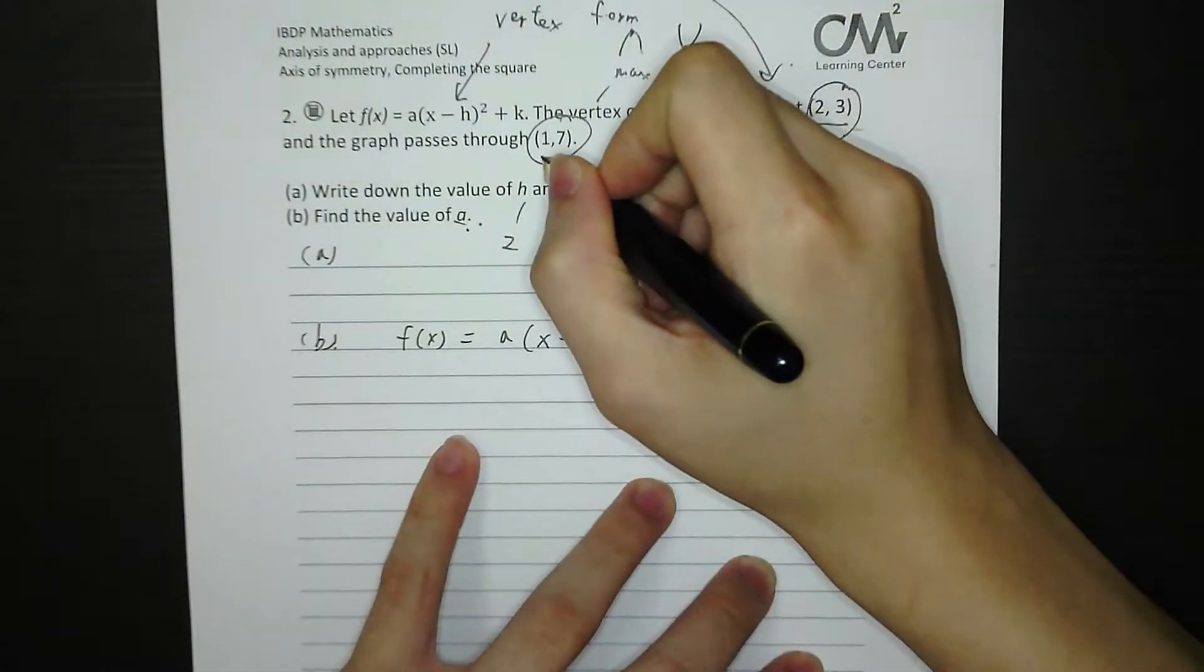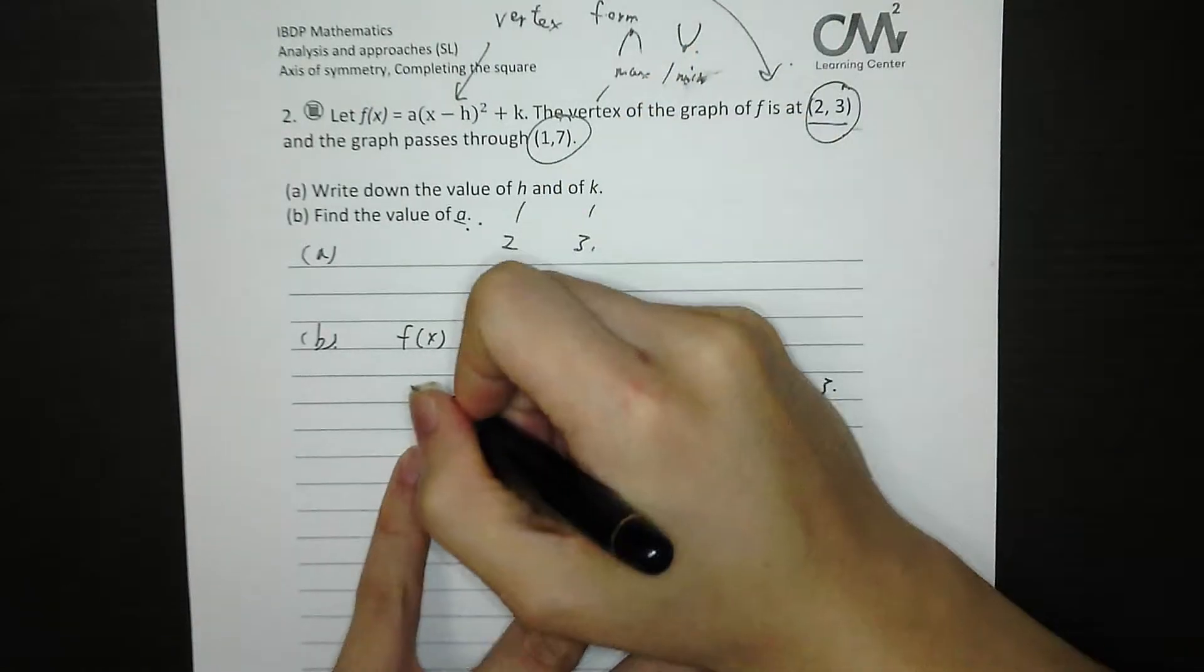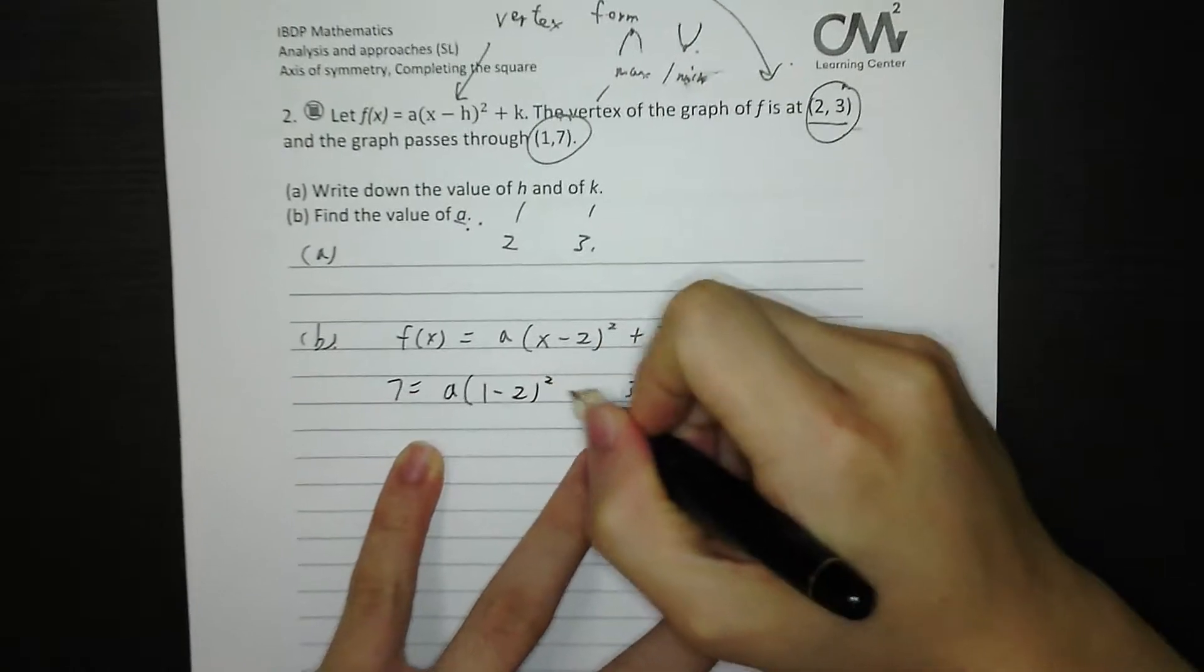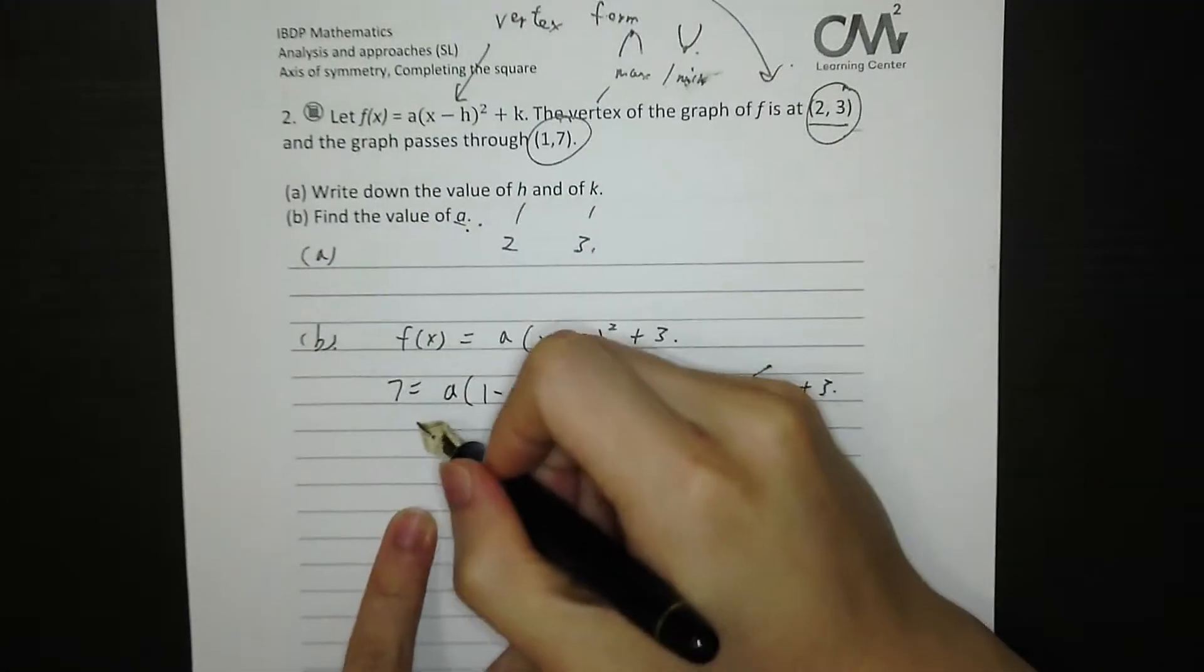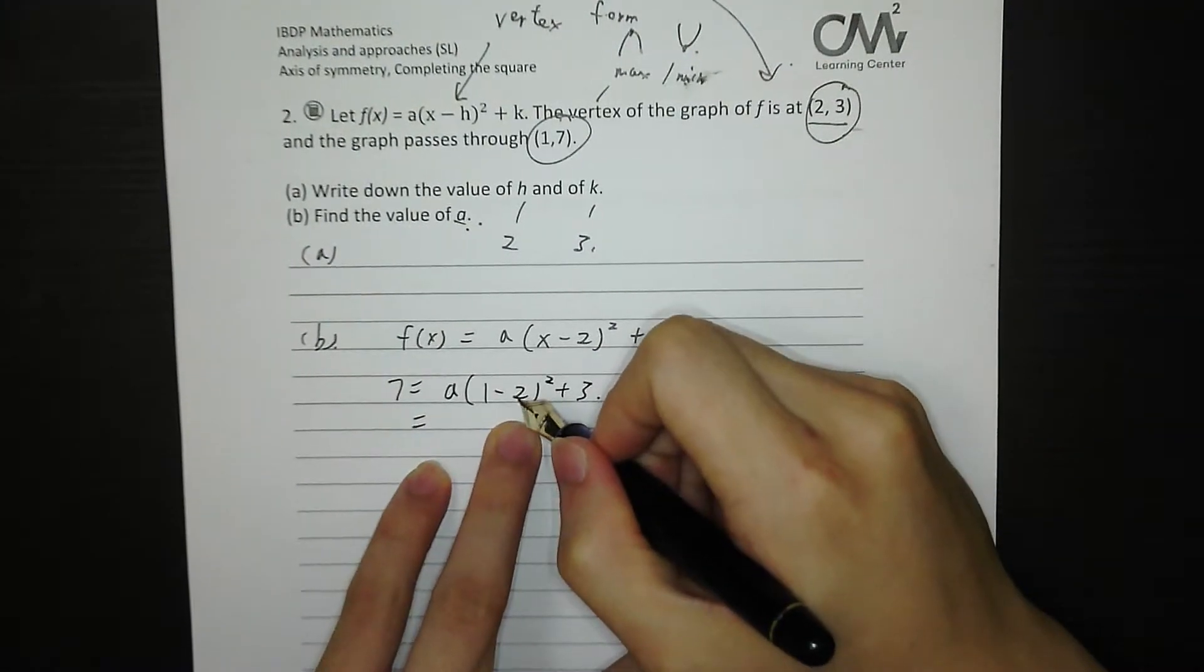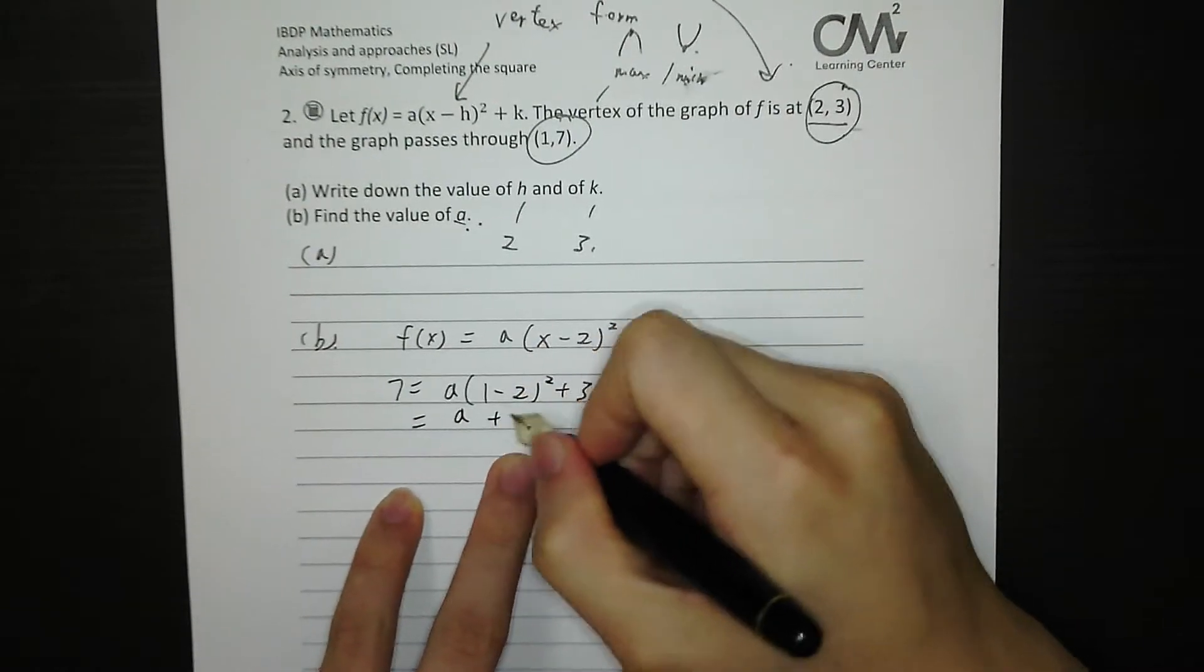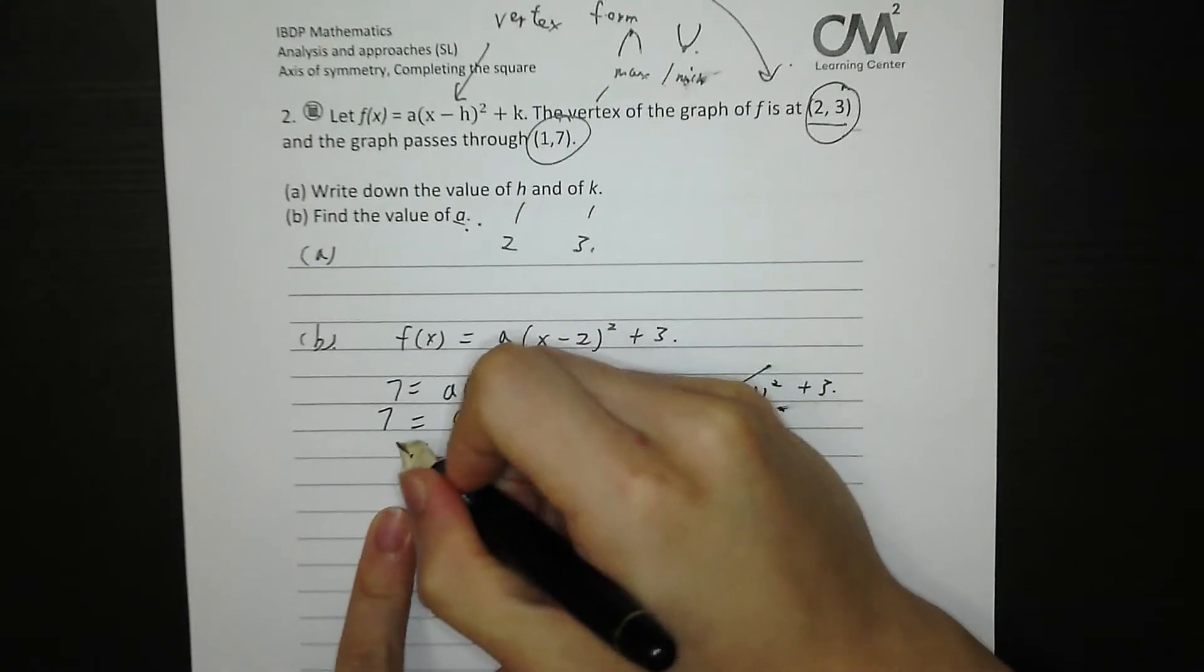That means we have to sub x = 1, y = 7. So 7 = A(1 - 2)² + 3. 1 minus 2 is -1, and -1 squared is positive 1. So A = 4.